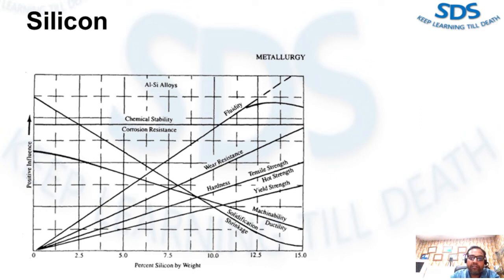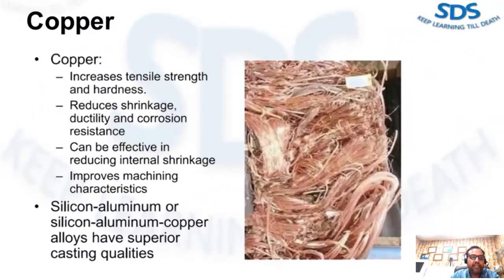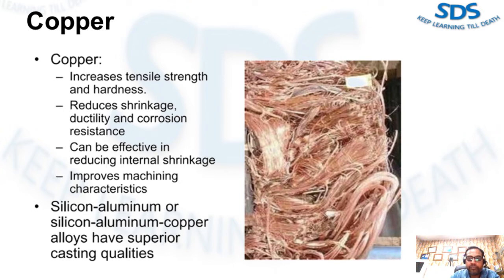Silicon has a melting point of 2,570°F. The solubility of silicon in aluminum is 1.65% at 1,070°F. Regarding copper: tensile strength and hardness increase as copper content increases. Increasing copper content directly increases the tensile strength and hardness of your casting. Shrinkage, ductility, and corrosion resistance are reduced. Copper can be effective in reducing internal shrinkage and improves machining characteristics by increasing the hardness of the alloy matrix.